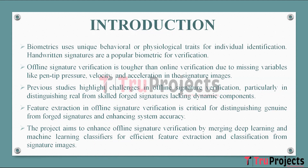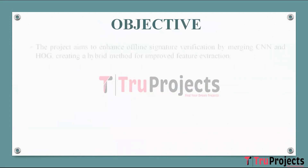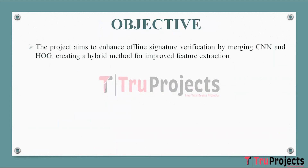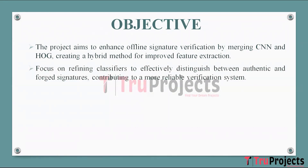The objective of the project is to improve the feature extraction implementation stage in offline signature verification systems by developing a hybrid method that combines deep learning CNN and machine learning HOG techniques. The project aims to enhance classifier algorithms to better differentiate genuine signatures from skilled forgeries, improving the reliability and accuracy of offline signature verification systems.